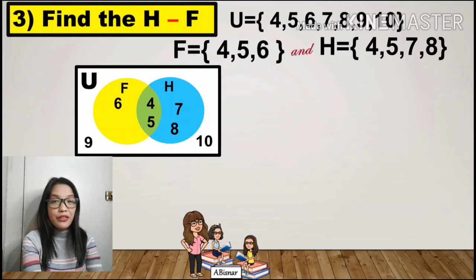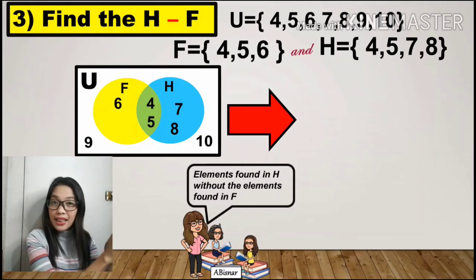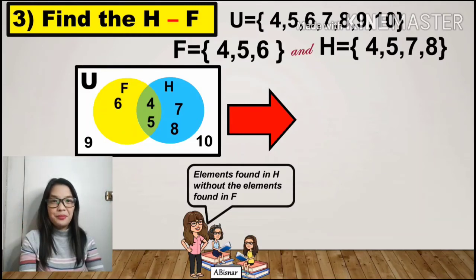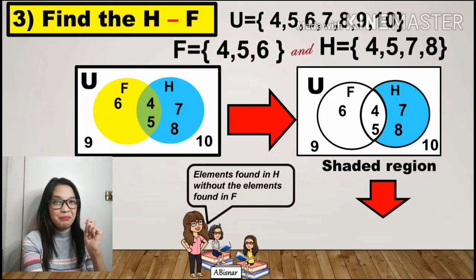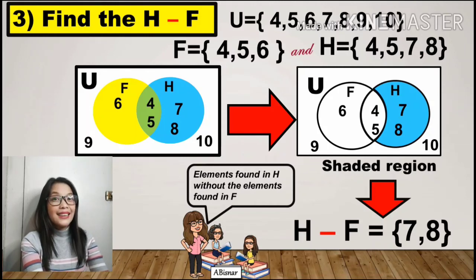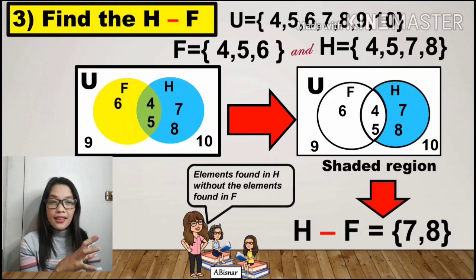To get the difference H minus F, we take the elements found in H without the elements in F that are also in H. The elements inside the shaded region are 7 and 8, which is the difference of H and F. Note that 9 and 10 are not part of the result because 9 and 10 are not included in set H.